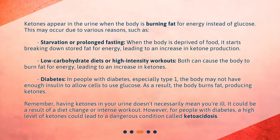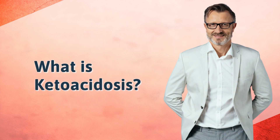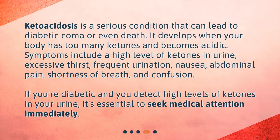However, for people with diabetes, a high level of ketones could lead to a dangerous condition called ketoacidosis. Ketoacidosis is a serious condition that can lead to diabetic coma or even death. It develops when your body has too many ketones and becomes acidic. Symptoms include a high level of ketones in urine, excessive thirst, frequent urination,